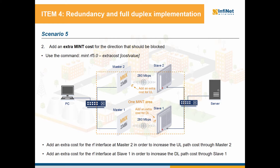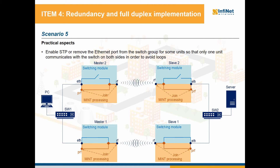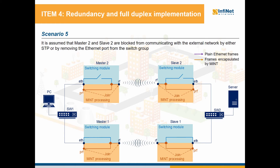Let's see what we achieved by doing all this. We'll use a logical scheme for our further discussion. First of all, an important notice is that you should either enable STP or remove the Ethernet port from the switch group for some units, so that only one unit will be able to communicate with the switch on both sides. These measures will eliminate the loops in your network because, as you know, loops can cause very serious broadcast storms that lead to increased bandwidth consumption and high CPU resource utilization. Based on this, we'll assume that master 2 and slave 2 are blocked from communicating with the external network by either STP or by removing the Ethernet port from the switch group.